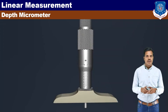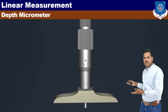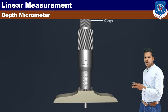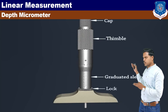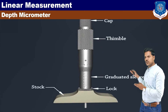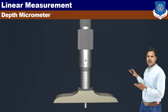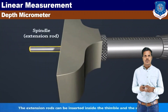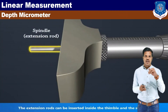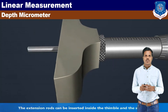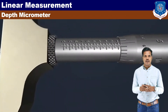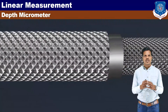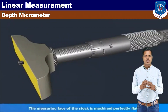That is the depth micrometer. The different parts of the depth micrometer are: cap, thimble, graduated sleeve, sleeve and lock, and spindle. The spindle acts as an extension rod. The principle of calculation is the same as the simple micrometer. The yellow base portion has a hole — we keep it on the base.